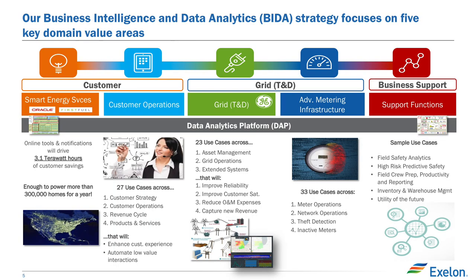Smart energy services — we work with Opower to centralize across our six utilities how customers can use their power better. Customer operations is about a 360 view of the customer and doing a better job of understanding them. Grid T&D, which Andy and Kai will talk more about, is about reliability, resiliency, and all the key things we know about. AMI — we've already done AMI deployments at most of our utilities. Business support is the forgotten child of analytics — things like field safety, doing a better job of safety-driven analytics for our employees.